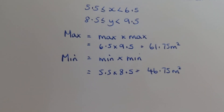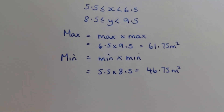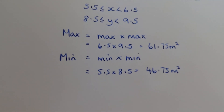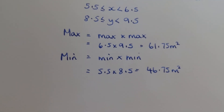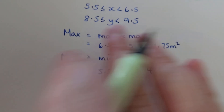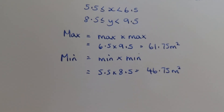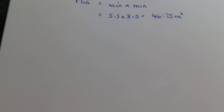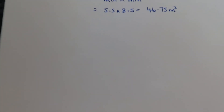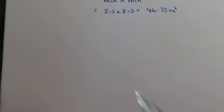So that's how to deal with multiplying error intervals: minimum times minimum gives you the minimum, maximum times maximum gives you the maximum. I know it seems like common sense, but when it comes to dividing — which we'll look at next — it's important that you remember max times max equals max, min times min equals min.